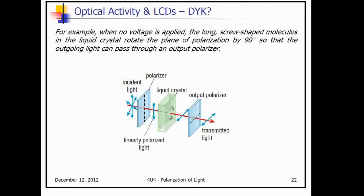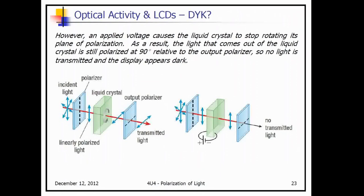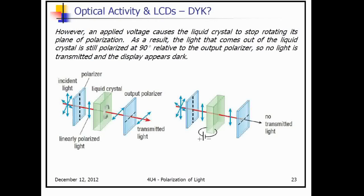When no voltage is applied, the long screw-shaped molecules in the liquid crystal rotate the plane of polarization by 90 degrees so that the outgoing light can pass through the output polarizer. However, an applied voltage causes the liquid crystal to stop rotating its plane of polarization. As a result, the light coming out of the liquid crystal is still polarized at 90 degrees relative to the output polarizer, so no light is transmitted and the display appears dark.